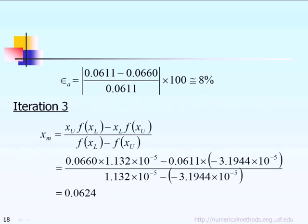After that, we calculate the relative absolute error norm, which is based on 0.0611. This value represents the current estimated root, subtract 0.0660 which represents the predicted root in the previous iteration, divide by the current predicted root, and then we multiply by 100. So now we got 8% error. And again, the procedure repeated.